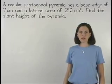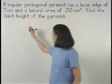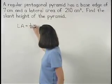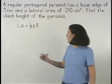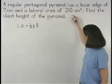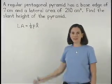Remember that the formula for the lateral area of a pyramid is 1 half perimeter of the base times the slant height. We're given that the lateral area is 210 square centimeters, but we don't know the perimeter of the base.